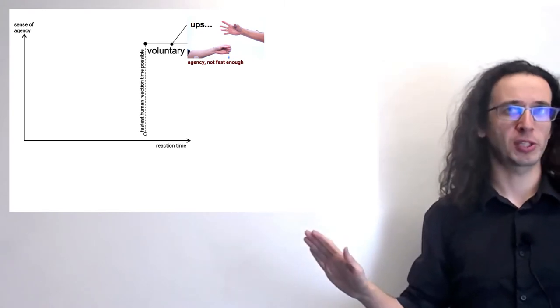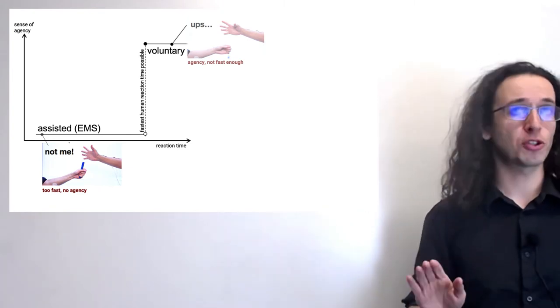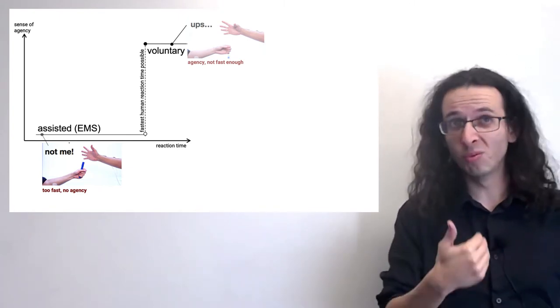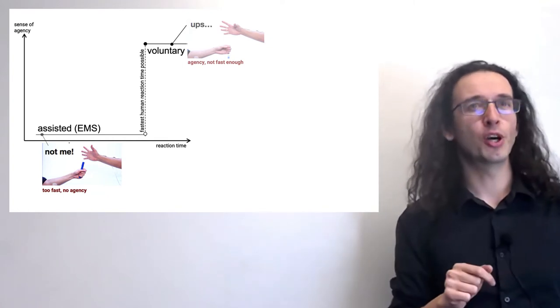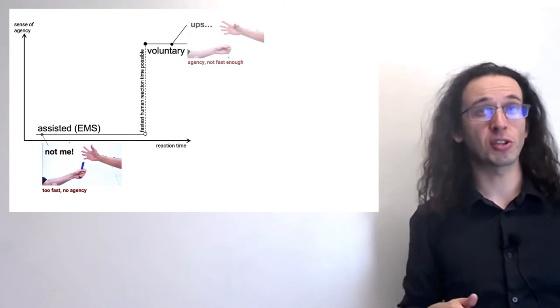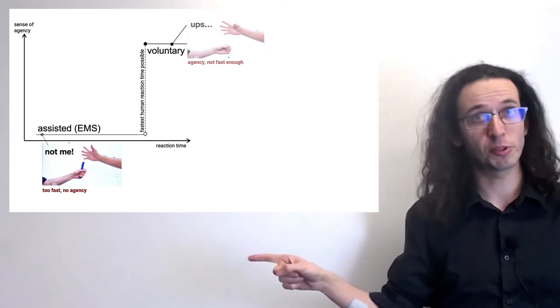Now let's plot your fastest reaction time. You would assume that any muscle stimulation that causes you to catch the pen faster than your own sense of your fastest reaction time would result in you immediately knowing that you didn't do it, and thus resulting in sort of a binary sense of agency. Either you did it, or you were helped by the muscle stimulation.